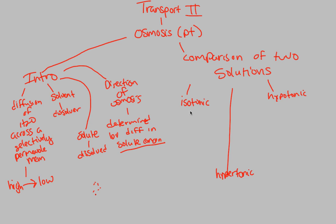Isotonic is the easy one. 'Iso' means the same or very similar, and 'tonic' refers to the amount of solute. Two solutions are isotonic when they have the same solute concentration — we write 'two solutions with same solute concentration.' Brackets denote concentration in biology and chemistry. This is what we consider 'just right.'